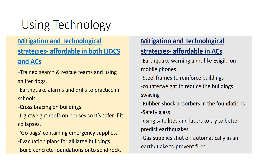Buildings can be strengthened by using cross bracing — for example, having a steel frame. In a poor country where steel might be too expensive, simply building the roof out of lightweight materials makes it safer, so if the building collapses there's less weight on top of you. People can also be advised to have special go bags containing emergency supplies that they can grab very quickly, keeping them alive in the days after the disaster.